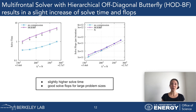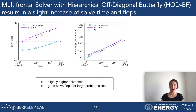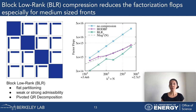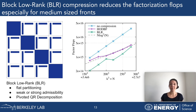These results look really promising. However, we know we can achieve even better factorization time and flops. This is why we also want to include the block-low-rank format, because it is known that this format can reduce the factorization flops, as seen in this figure.